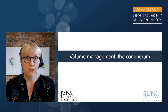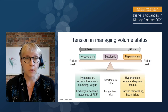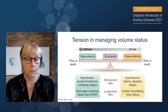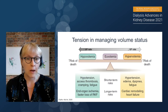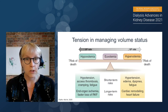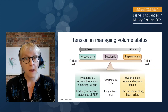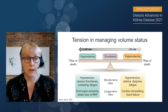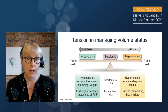First, the conundrum that we face when we manage volume. When we manage volume, we try to strike a balance between the risk of overly rapid fluid removal or higher ultrafiltration rates and the risk of hypovolemia — the shorter-term risk of hypotension, excess thrombosis, cramping, fatigue, and then their longer-term effects of end-organ ischemia and faster loss of residual kidney function.